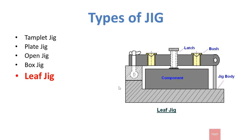The next type is leaf jig. In leaf jig, there is a lock and a pivot installed in the plate which can be opened by unlocking the lock. We can load and unload our workpiece easily. Leaf jig basically allows you to easily load and unload the workpiece. There is a latch which is used to hold or clamp the workpiece in its desired location.